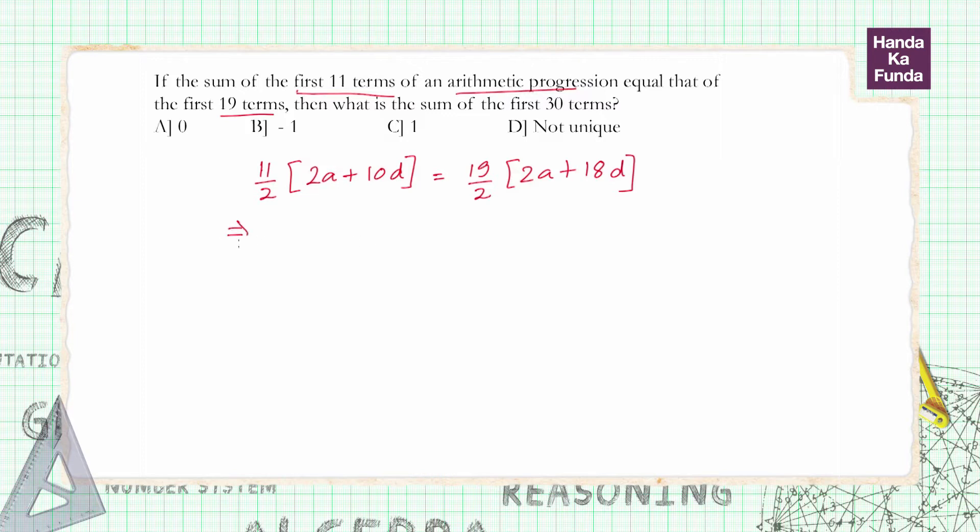So what does this give me? 2 and 2 will cancel. 11, 2A plus 10D and 2A plus 18D. 2 can be taken common from both of them so I will be left with 11 times A plus 5D which is 19 times A plus 9D.